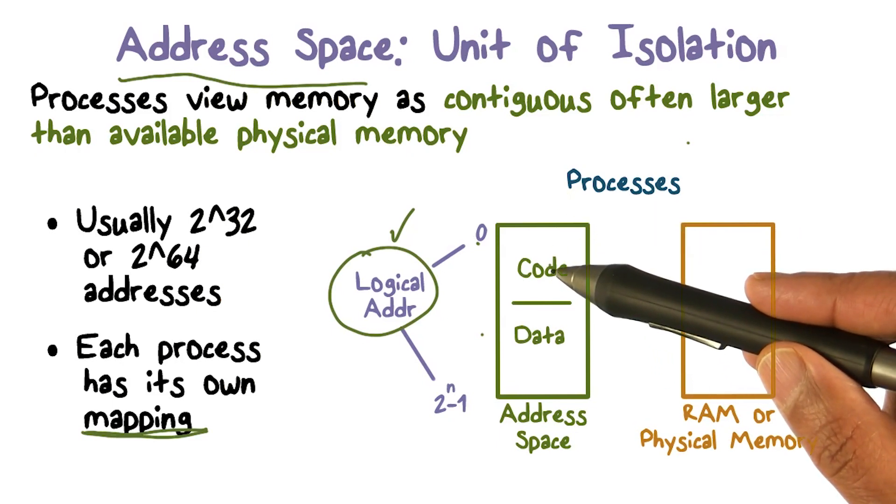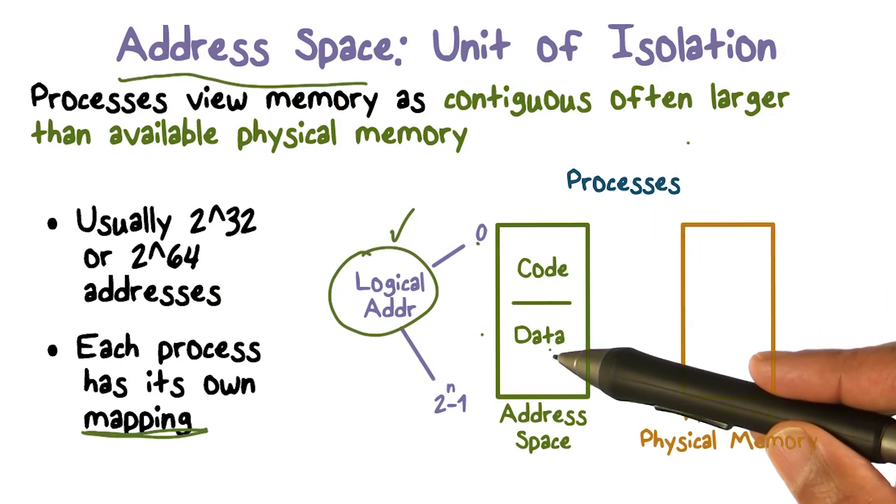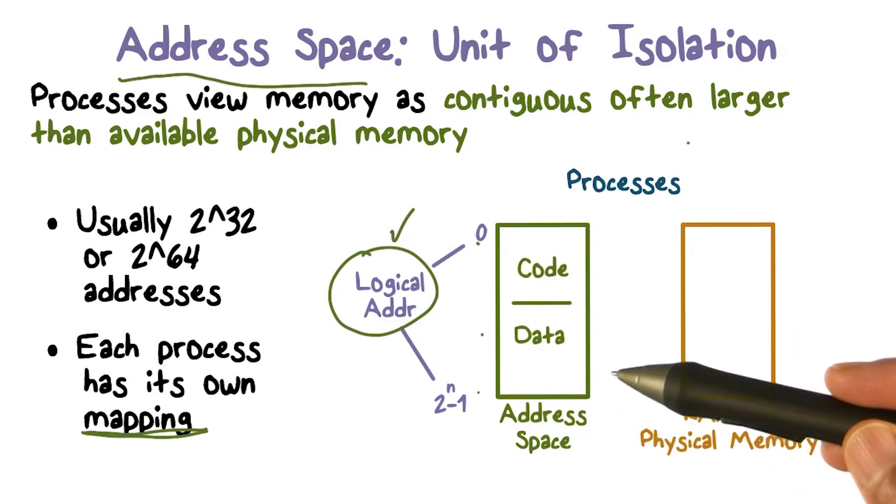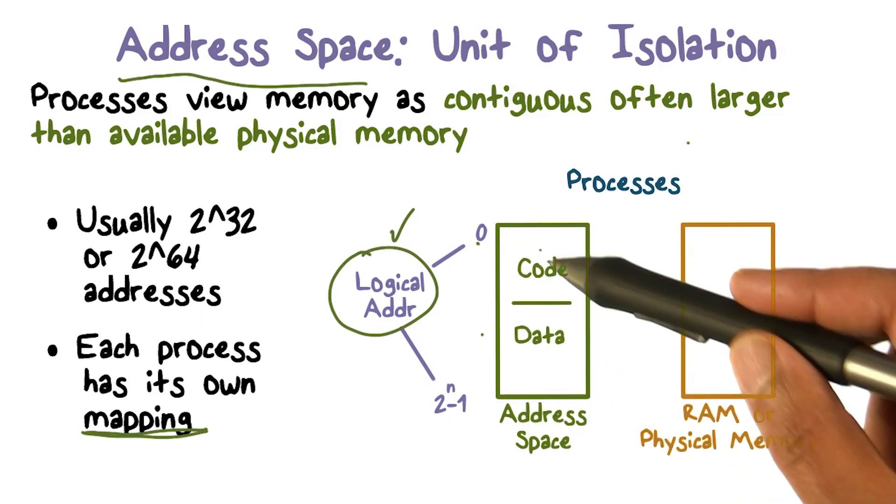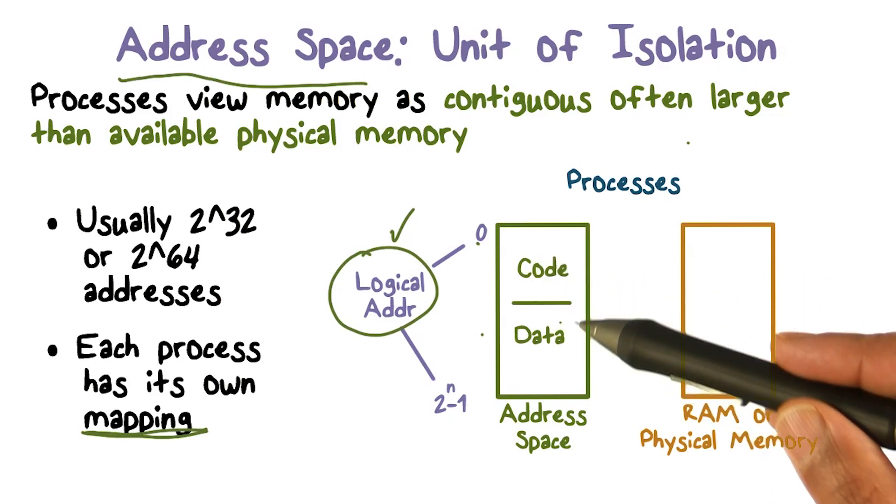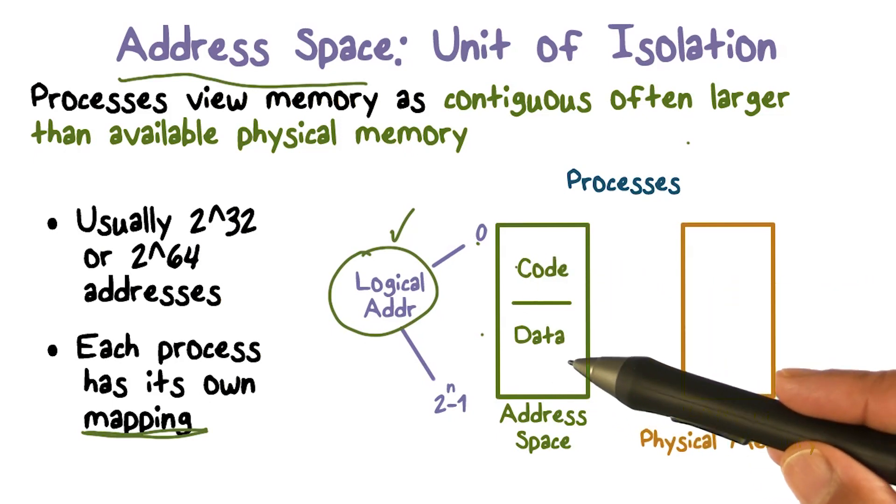The process is going to put its code and its data. So when we talk about an address space as unit of isolation, process has its own container of memory, where it can address different parts of it, different locations where it's going to place its code and data, and these are logical, or in case of virtual memory, virtual addresses.